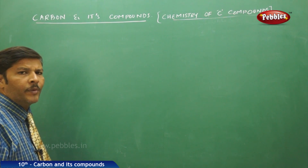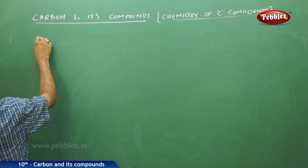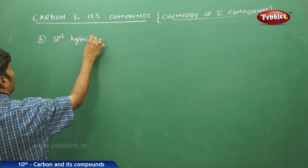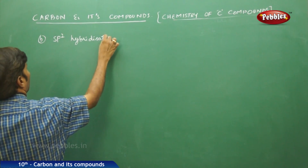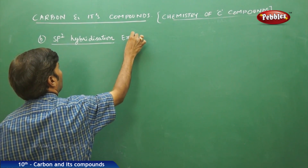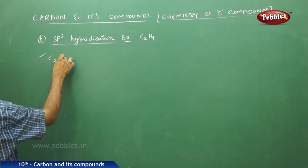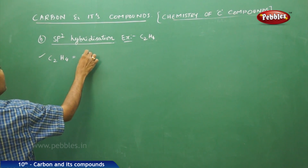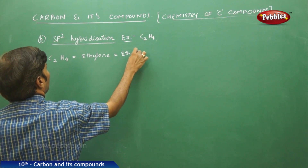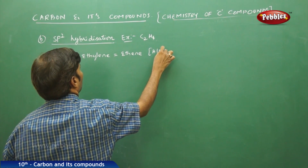Let us discuss the sp2 hybridization of carbon. The example under discussion is C₂H₄, which is called ethylene or ethene. It belongs to the class of organic compounds called alkenes, which are unsaturated hydrocarbons.